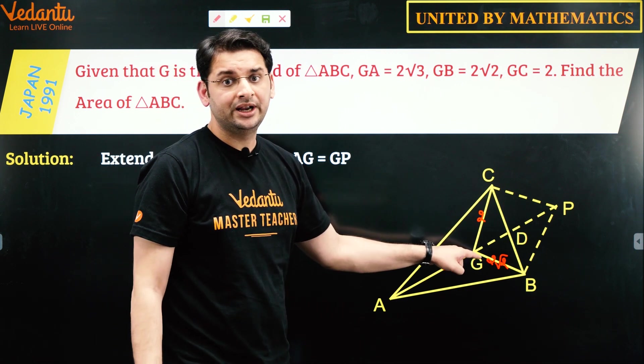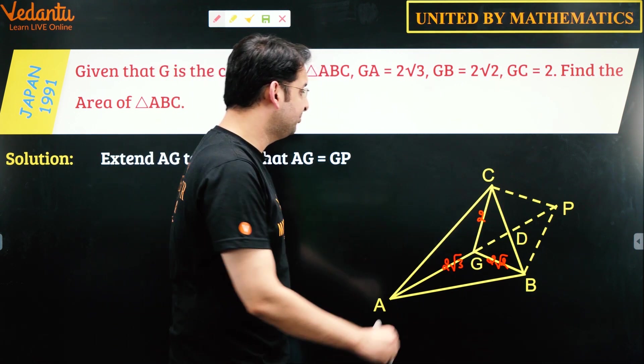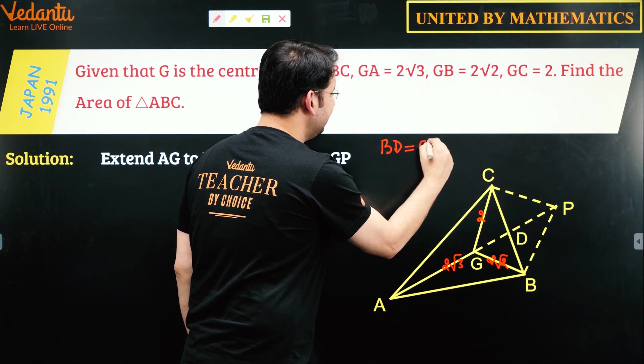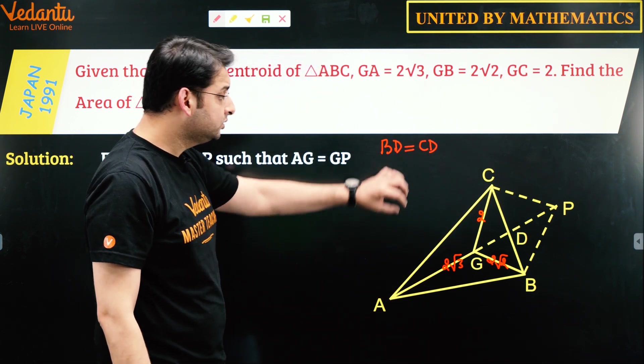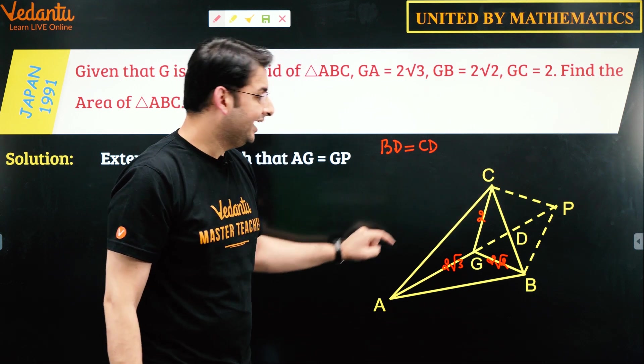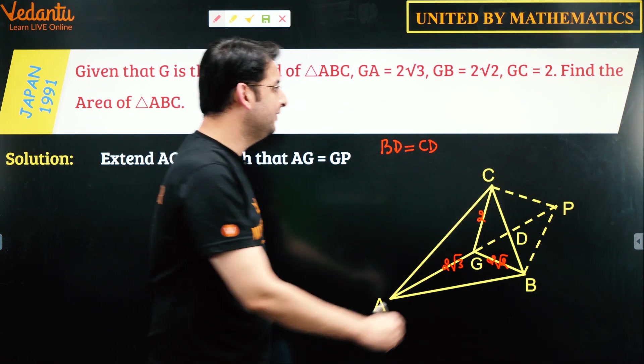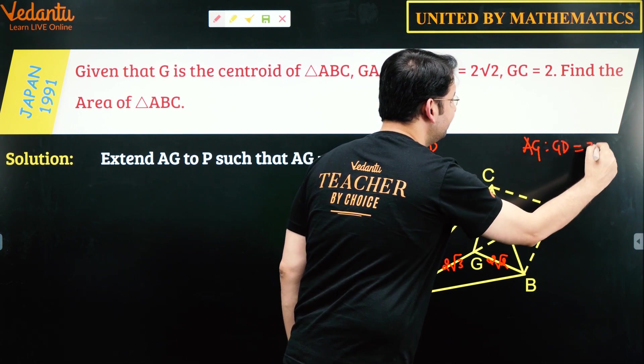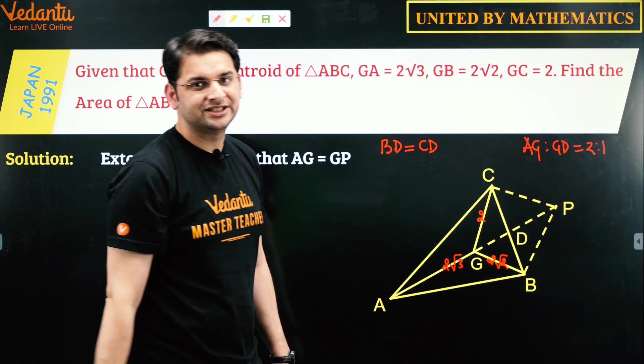Now clearly since G is the centroid, can I say D is the midpoint of BC. So we have BD is equal to CD first of all. Also, G divides AD in the ratio 2 is to 1, which is of course the property of the centroid.